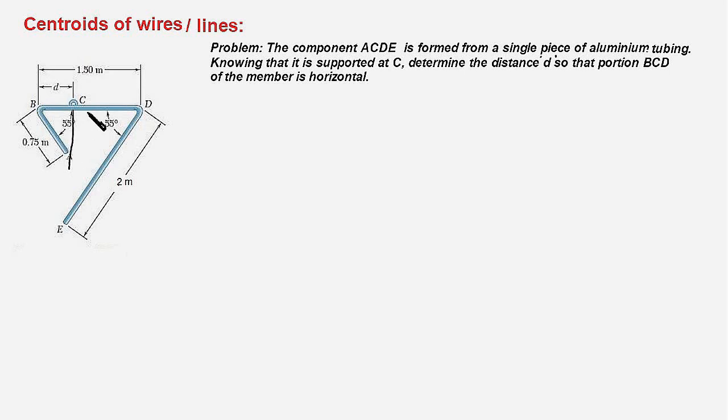Let us break up the entire component into three segments: AB, BD, and DE. X bar would represent the centroid of individual segments, and capital X bar is the X coordinate of the centroid of this component. As we did in the previous problem, we put the information in a tabular form.